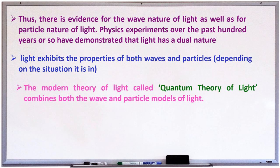Physics experiments over the past hundreds of years have demonstrated that light has dual nature, that is, particle nature as well as wave nature. Thus, light exhibits the properties of both waves and particles depending on its situation. The modern theory of light, called quantum theory of light, combines both wave and particle models of light. Children, in your future classes, you will learn in detail about these theories.